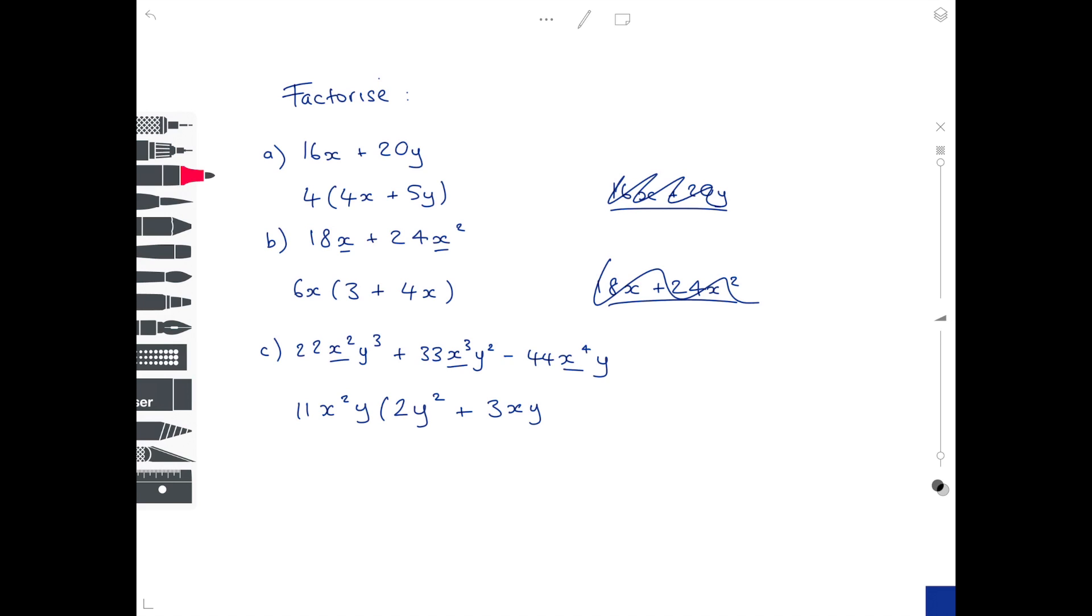Now looking at the last value, how do we get from 11x squared y to minus 44x to the 4 y? We need to multiply 11 by minus 4, x squared by x squared to get to x to the 4, and we've already got our y value, so there's nothing else we need to do. If you multiply that all out, you would see that your answer is correct.